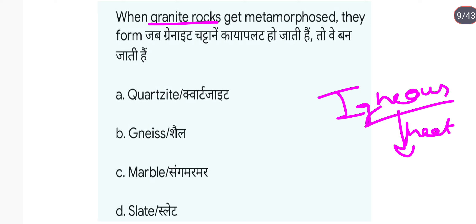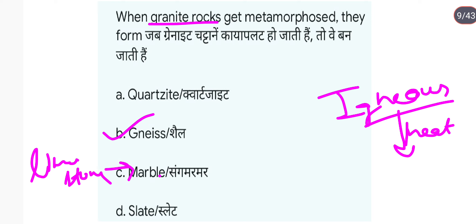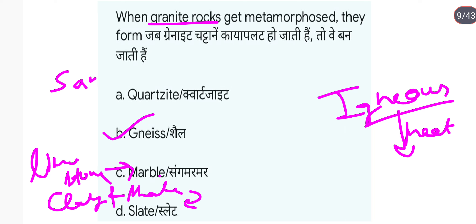When granite rock को heat किया जाता है तो यह shale बन जाती है। जब limestone को heat किया जाता है तो marble बन जाता है। Clay and shale को जब heat किया गया तो slate बन जाता है। और वैसे ही sandstone को heat किया गया तो quartzite बन जाता है।